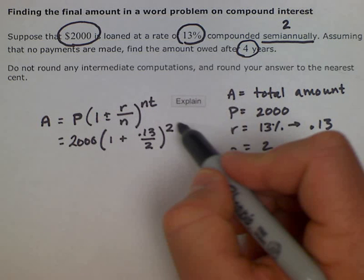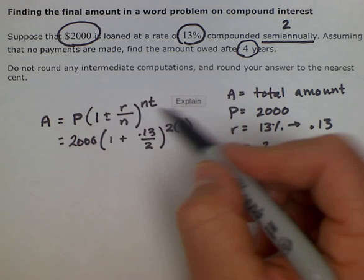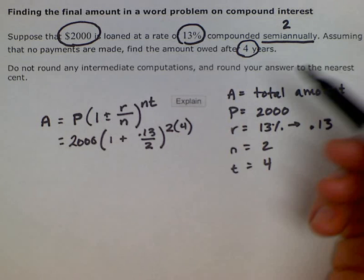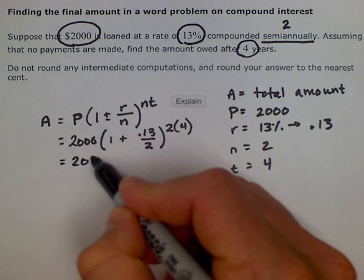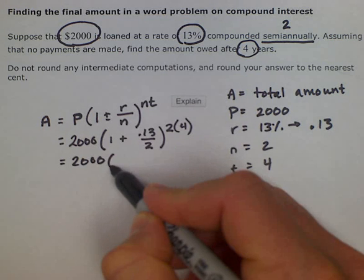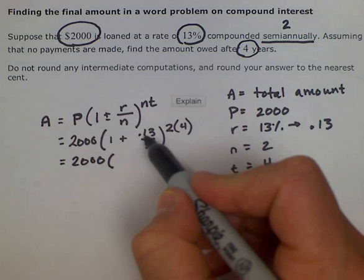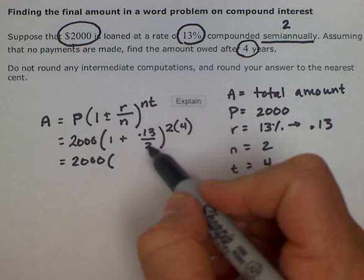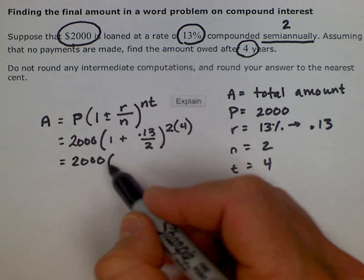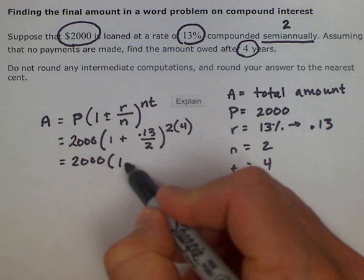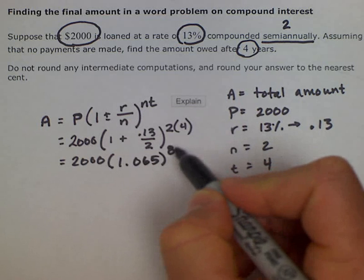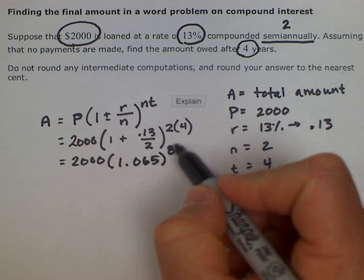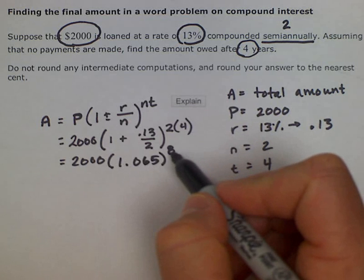So these two will be multiplied together, n times t, or 2 times 4. This is going to be simplified down to 2000 times—0.13 divided by 2 is 0.065, and when you add that to 1, it would be 1.065. And then 2 times 4 is 8. So 1.065 is raised to the 8th. Following order of operations, we take care of our exponents first, and then we multiply it by 2,000.